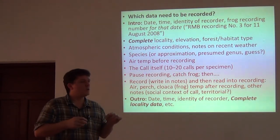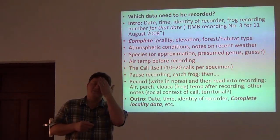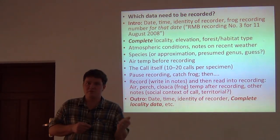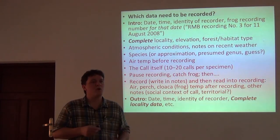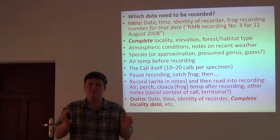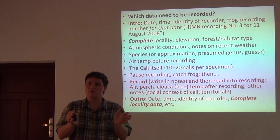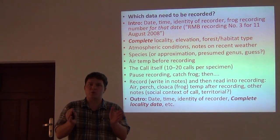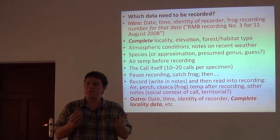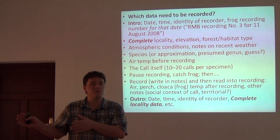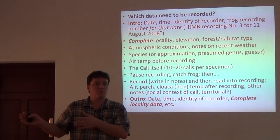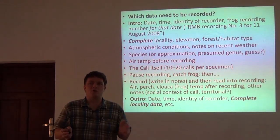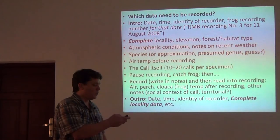Sometimes people make the mistake of thinking more is better and just let the recorder run for five minutes, getting 150 calls for a single specimen. But when you actually analyze those, you're probably going to use 25 or 30. A statistical sample is about 30 things — so you really want 20 to 30 calls per individual. If you're trying to manage your time, it's best to go on and start recording other individuals and get 20 to 30 calls from each, rather than leaving your microphone running and getting 150 or 200 calls for one frog.